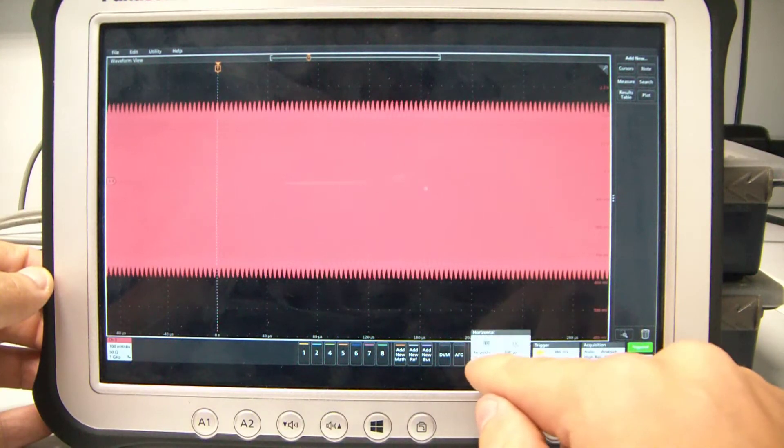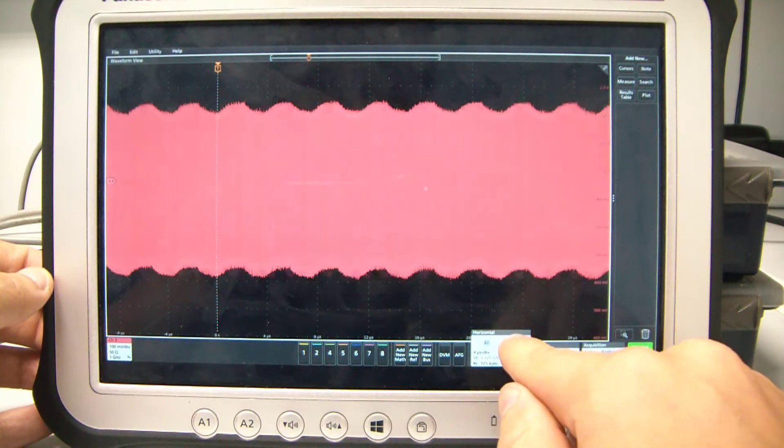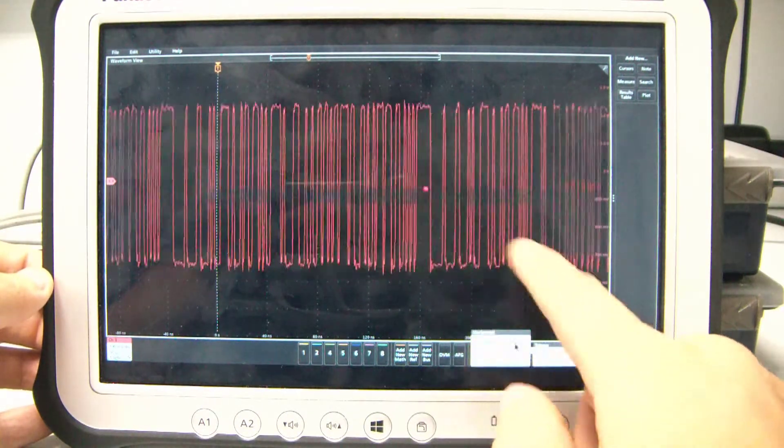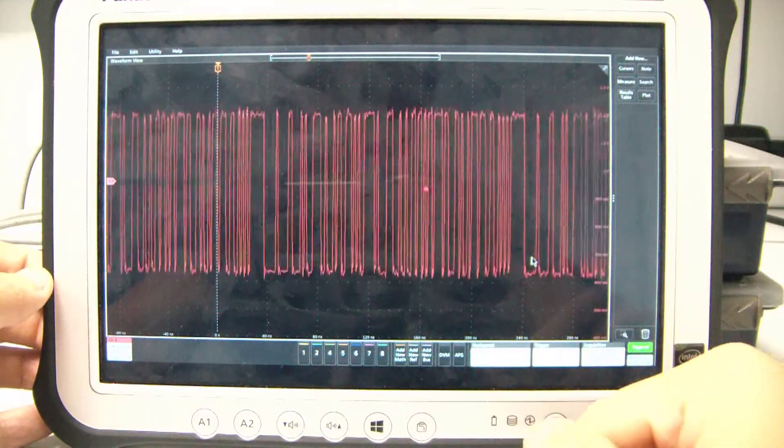OK, channel 3 is a kind of a digital signal, high speed. So let's do a jitter analysis on that.